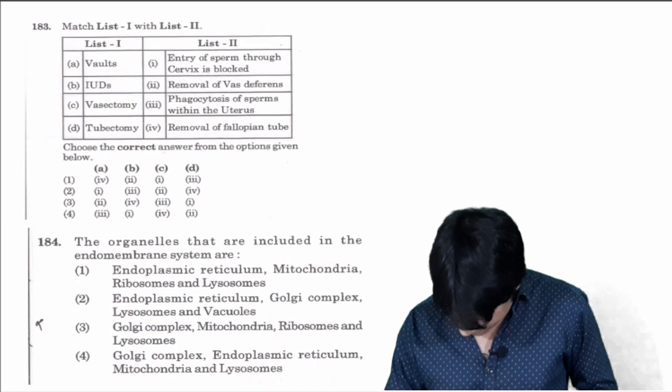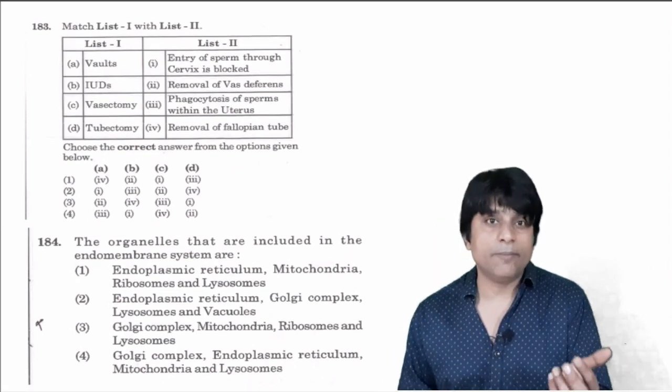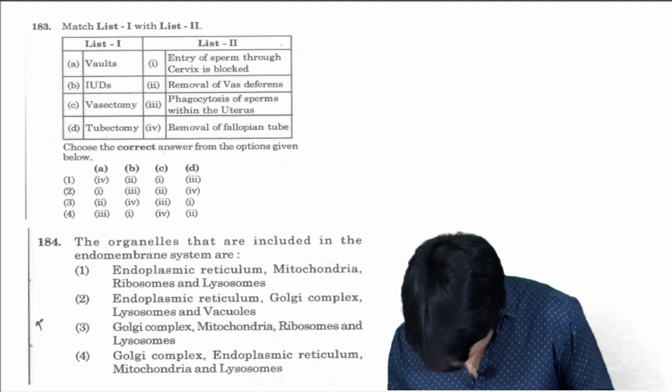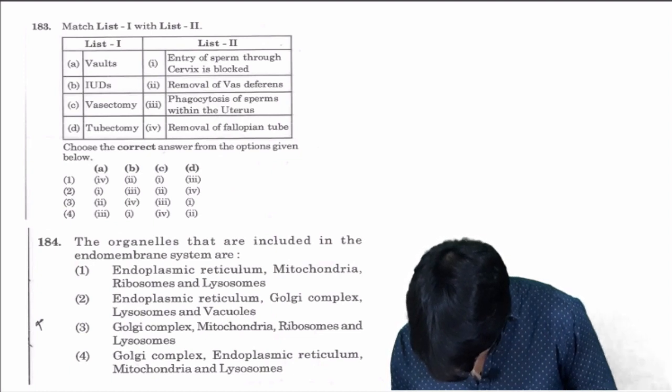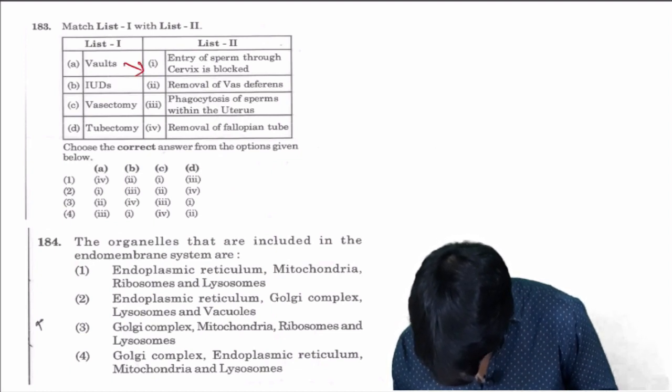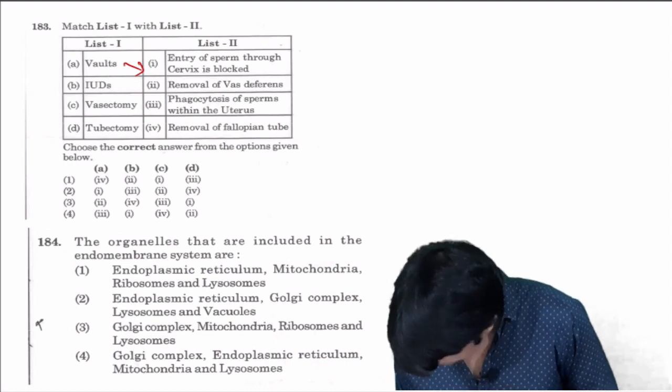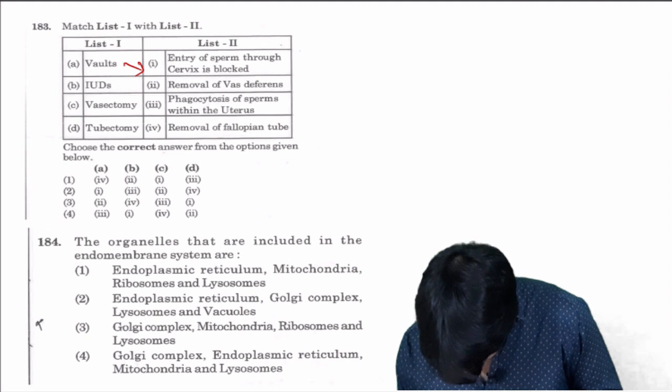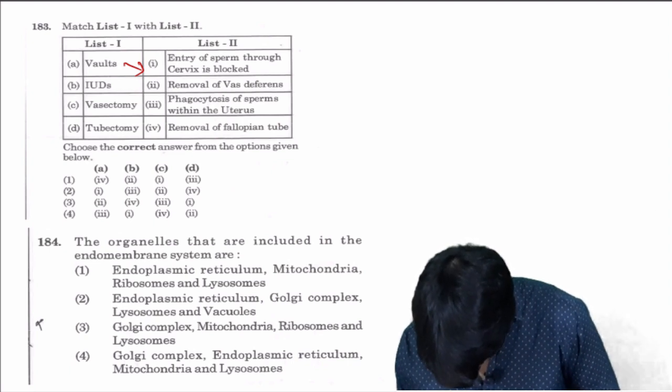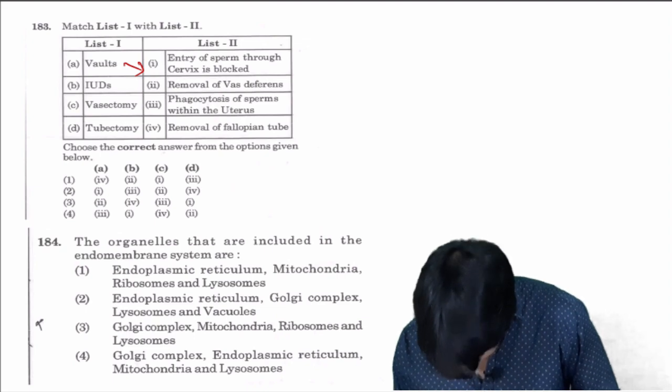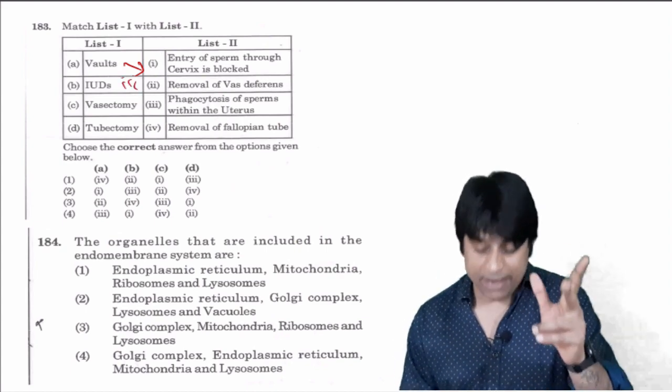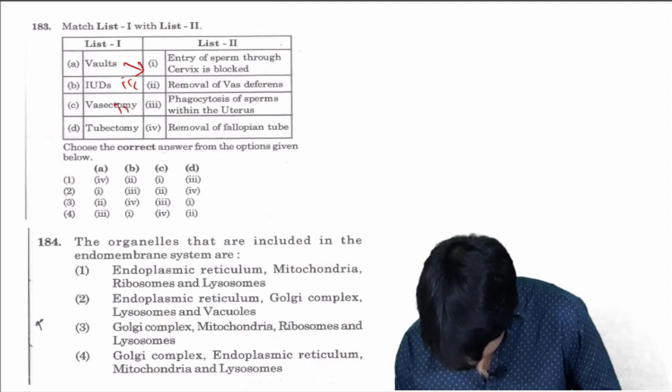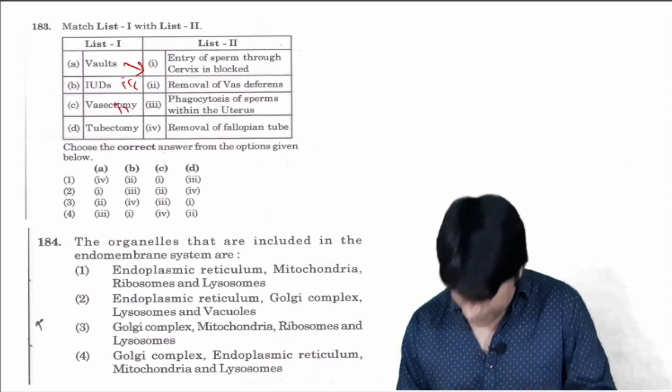Walls are barriers in female. Phagocytosis, removal of entry of the sperms through cervix is blocked, so A is one. Next, IUD is intrauterine devices, prevents sperms within the uterus, so this is three. Vasectomy, vas deferens is cut, removal of vas deferens is two. Tubectomy is fallopian tubes, D is four. So you get answer 1, 3, 2, 4.